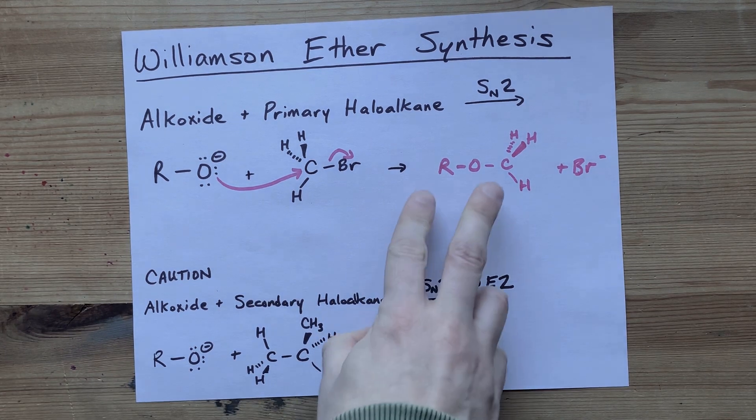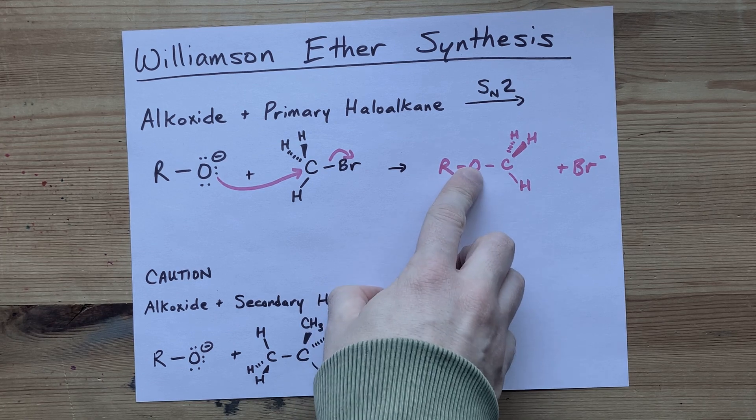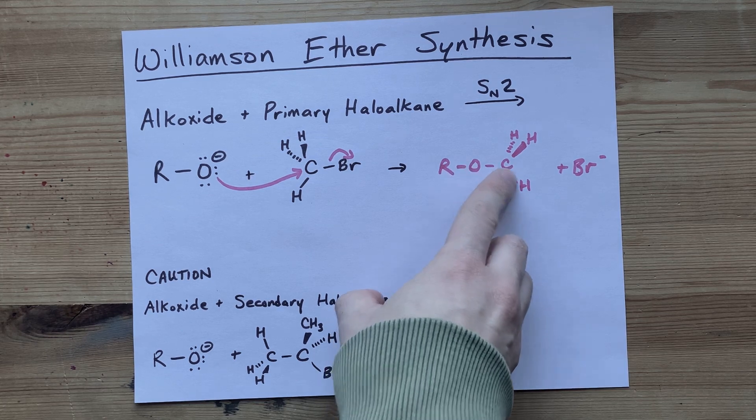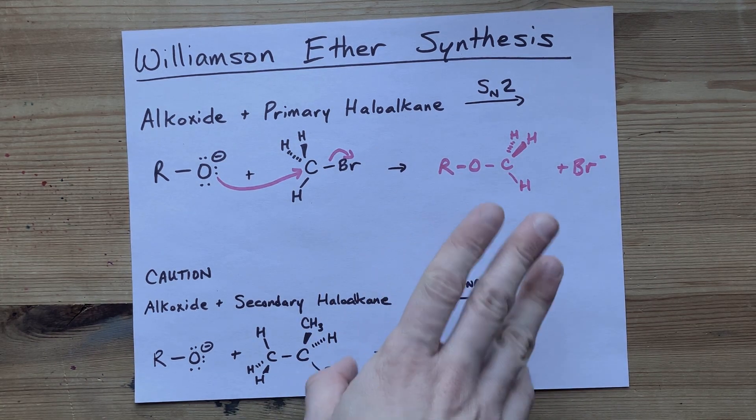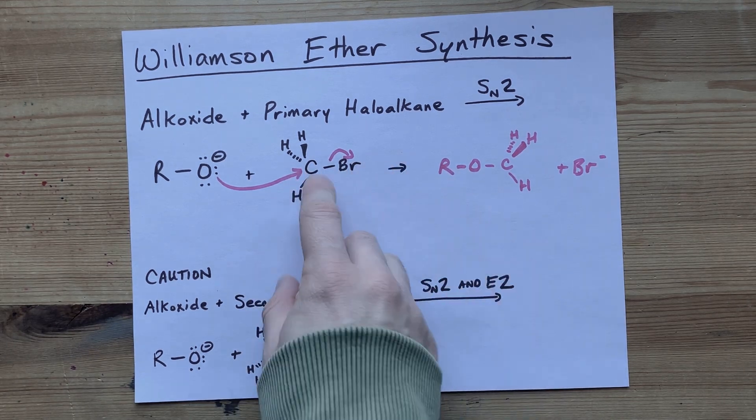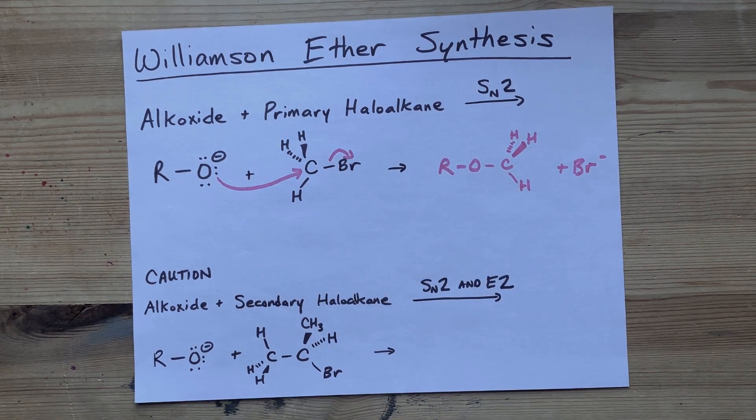So all of a sudden you now have an ether molecule. This is a single bonded oxygen with one carbon or alkyl group here and another carbon or alkyl group here. That's the definition of an ether. And we also want to point out that the stereochemistry, if there is any, around this carbon has switched, as it always does for an SN2 reaction.